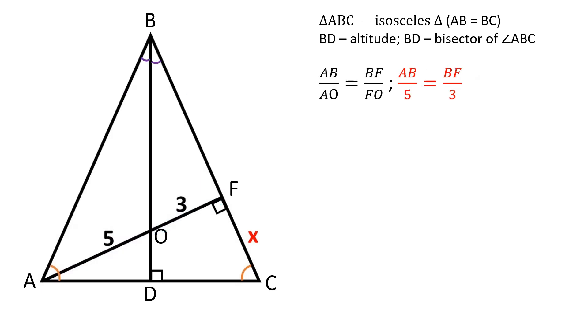Let's substitute in the value. AB over 5 is equal to BF over 3. We can represent AB as 5y and BF as 3y.